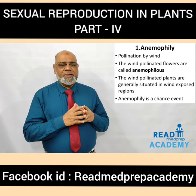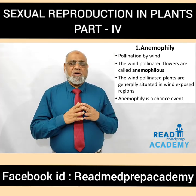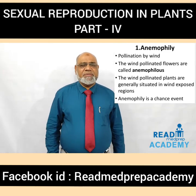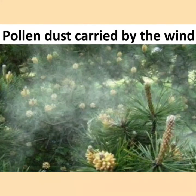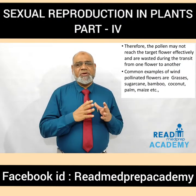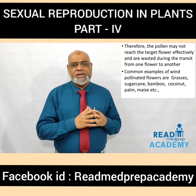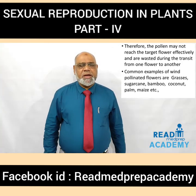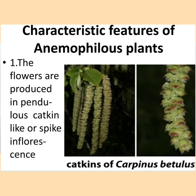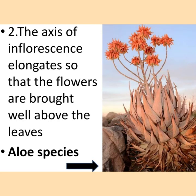What is anemophily? It is called pollination by wind. The wind-pollinated flowers are called anemophilous flowers. The wind-pollinated plants are generally situated in wind-exposed regions. Anemophily is a chance event — the pollen may not reach the target flower effectively and is wasted during transit. Common examples of wind-pollinated flowers are grasses, sugarcane, bamboo, coconut palm, maize, etc. The characteristic features of anemophilous plants: number one, the flowers are produced in a pendulous catkin-like or spike inflorescence. You can see on the right side the catkins of Carpinus.